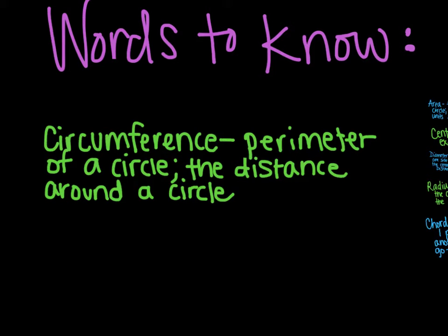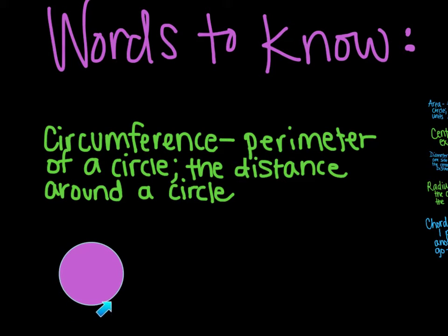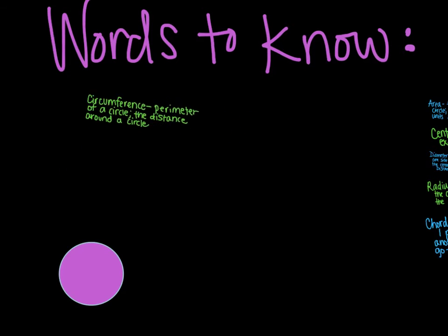So I'm going to draw a circle here for you. Okay, here's my circle. And the circumference is the distance around it. So what looks like this grayish-whitish border, that is the circumference of a circle.